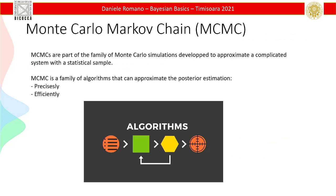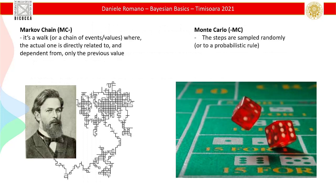When we cannot calculate our marginal likelihood, we cannot calculate the posterior because we have nothing to multiply with the prior, and we should approximate it. We can do it using this family of algorithms that are useful for approximating a complicated system with statistical samples. We randomly sample from the posterior, calculate the probability, and reconstruct how the posterior looks. A Markov chain means it's a walk where the actual value is directly related only to the previous one. The Monte Carlo part means there are some random steps within there.